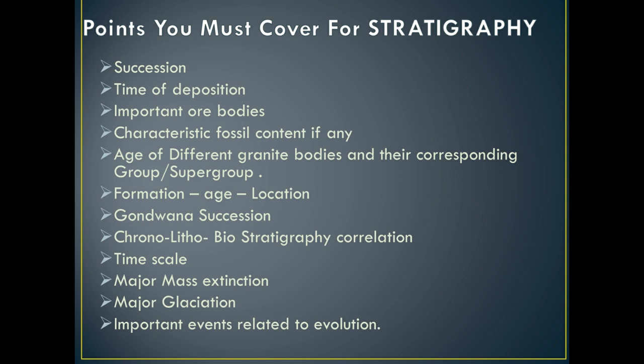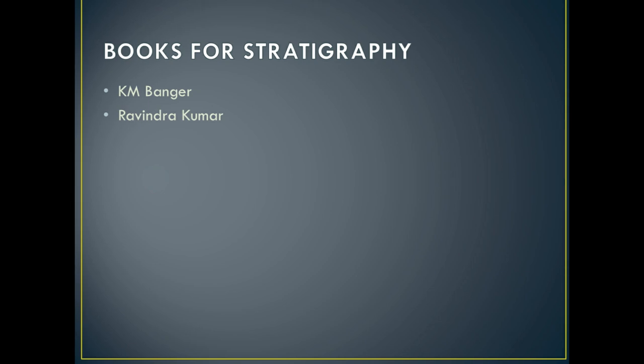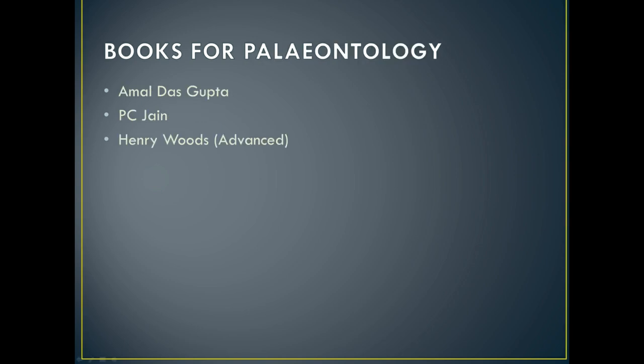That's basically all the points that are very important from the JAM perspective. Now let's look at the books we should read for stratigraphy and paleontology. For stratigraphy, follow the Textbook of Engineering Geology by K.M. Bangar and Stratigraphy of India by Dr. Ravindra Kumar — two standard books at the BSc level. For paleontology, the books are Amaldas Gupta, P.C. Jain, and Anant Ramad. Read P.C. Jain for basic understanding of paleontology concepts, and follow Amaldas Gupta for examples of different features like coiling in Gastropoda and dentition of Lamellibranchia.